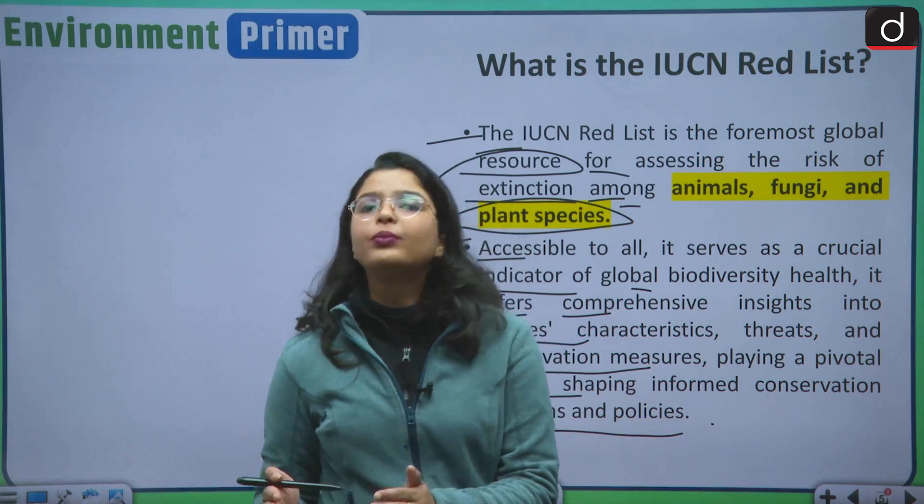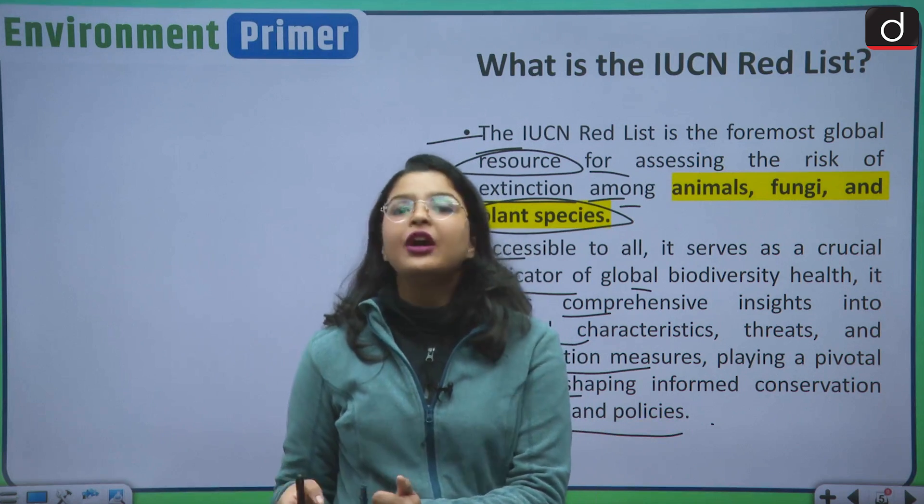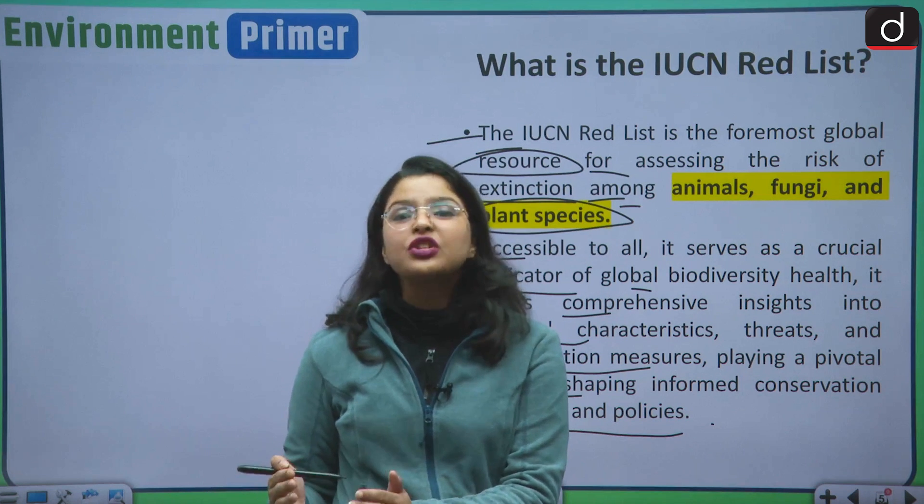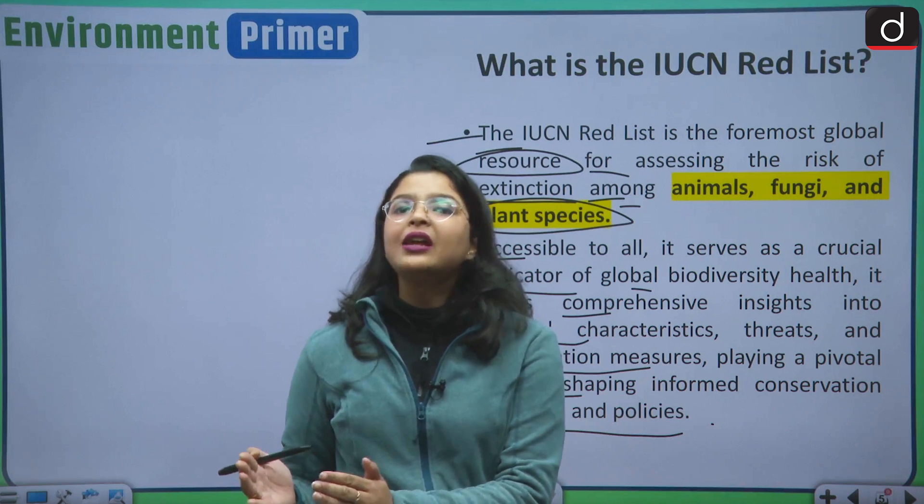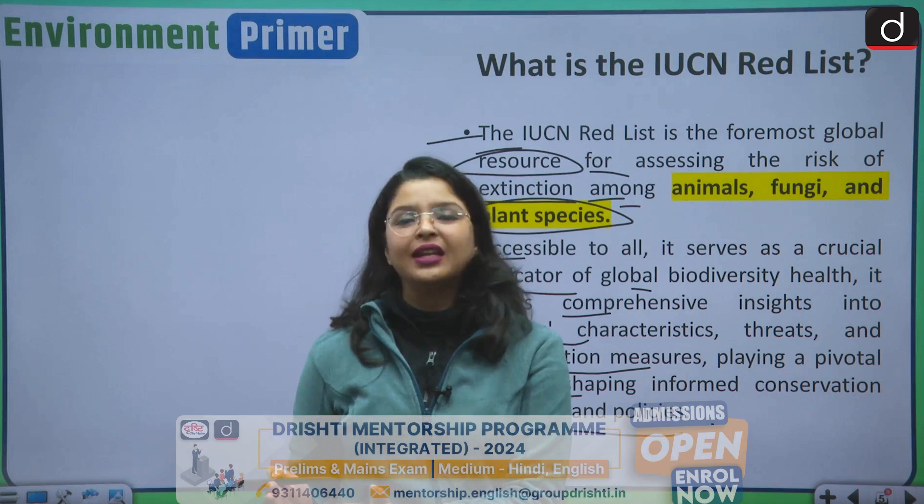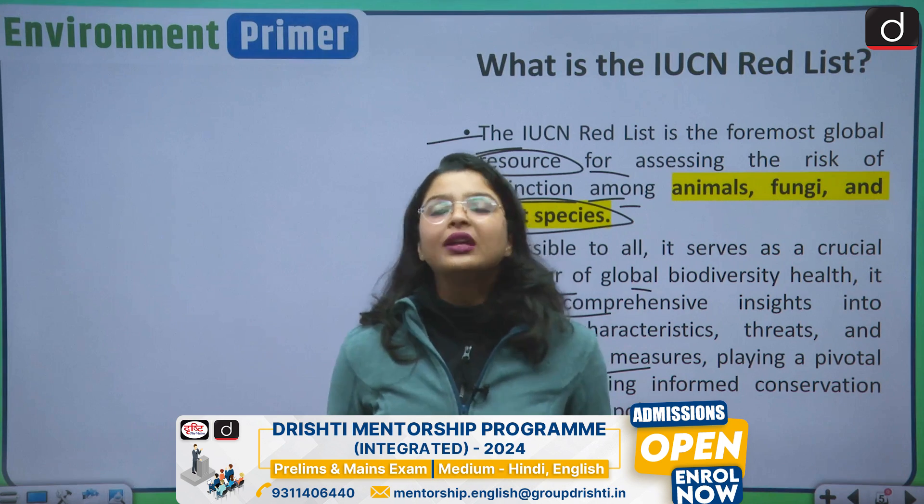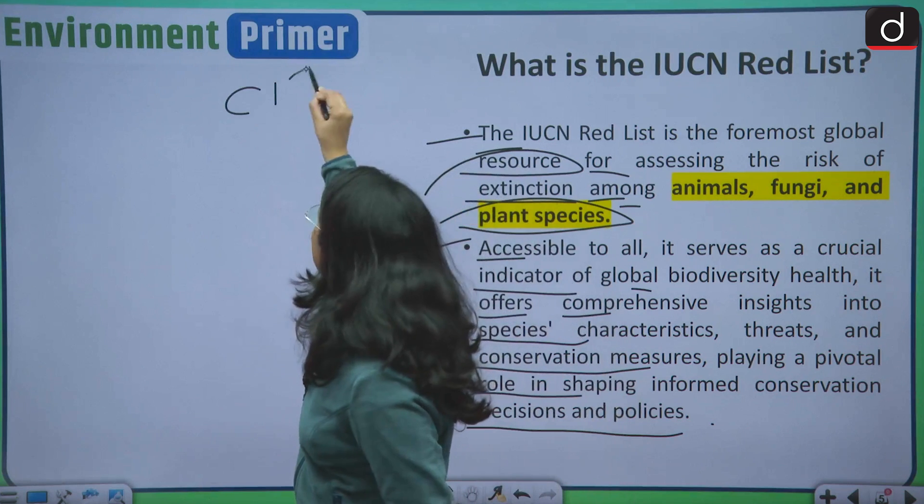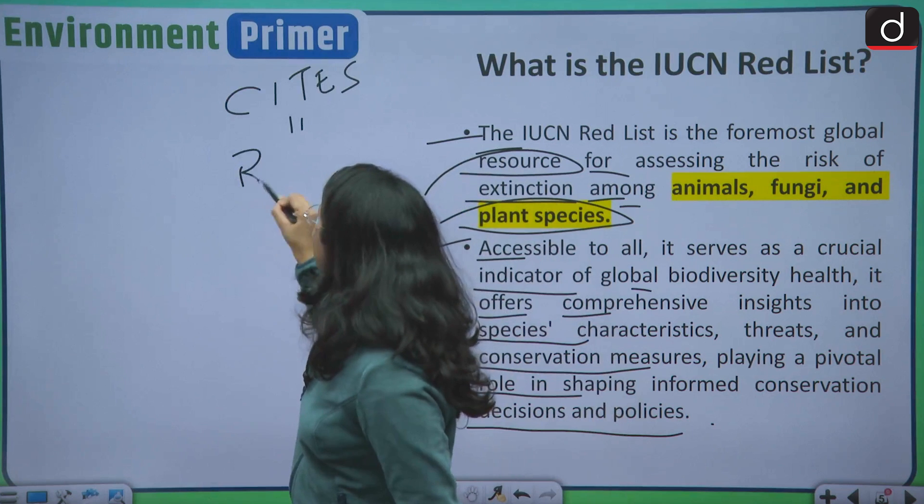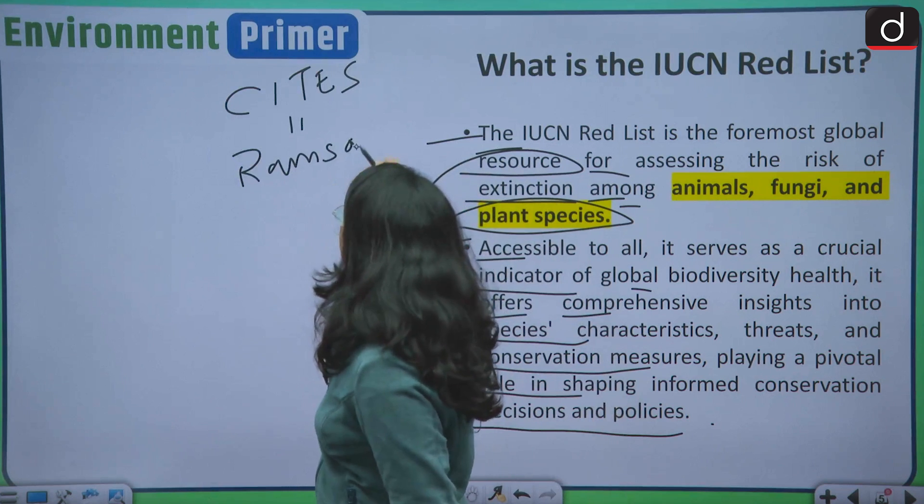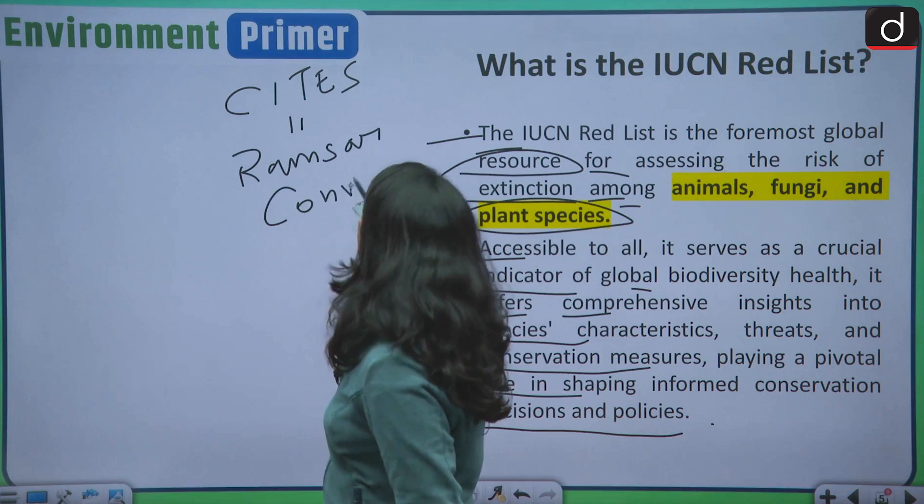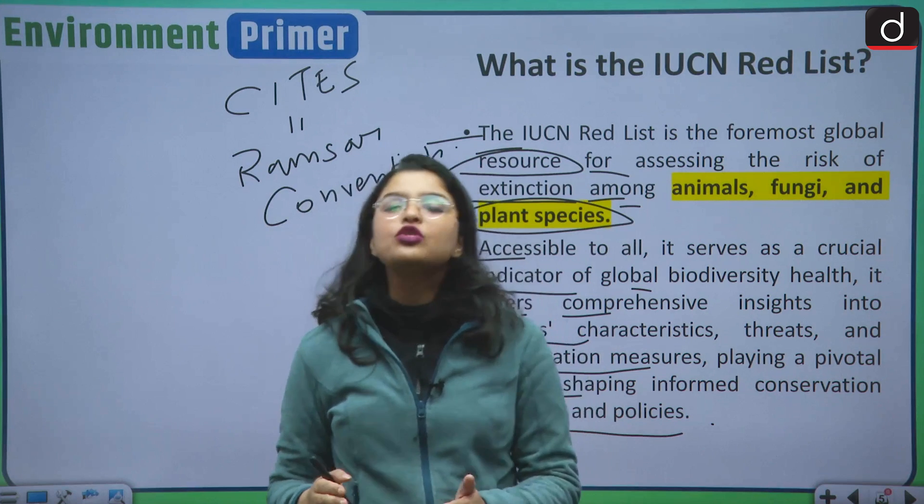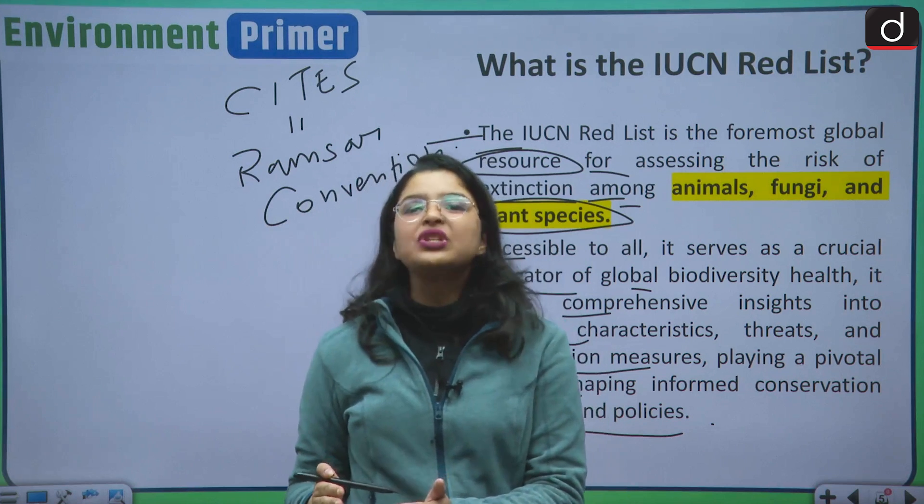Whenever across the globe, the policies are being made for conservation, whenever we are trying to assess those species which require immediate attention, we turn our heads towards the IUCN Red List. This IUCN Red List is also relied upon by various international conventions such as the CITES, Ramsar Convention. All of these international agreements also rely on this IUCN Red List data.